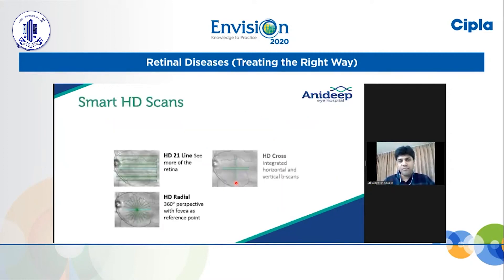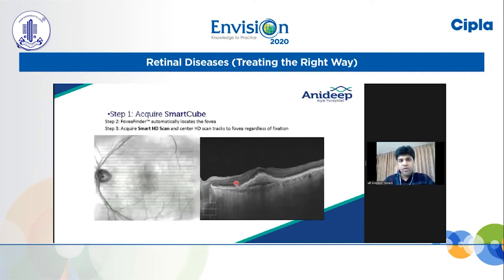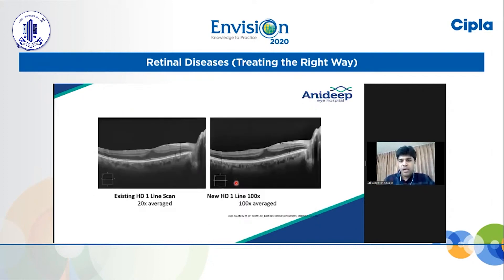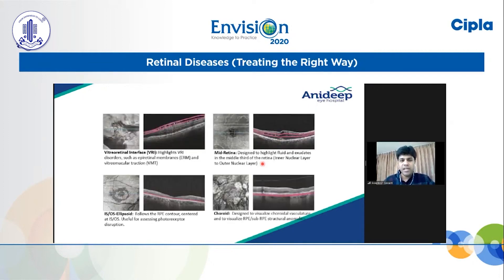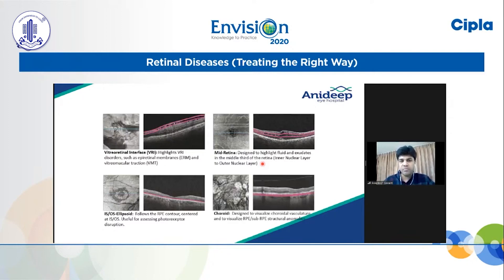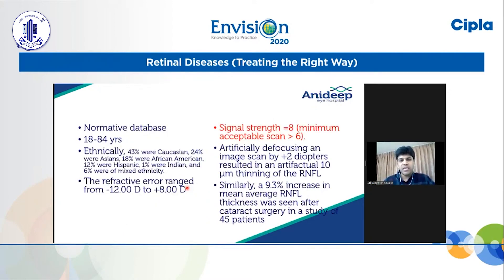The newer OCT machines have high-definition scans. We can also have something like a smart cube if it is difficult for the patient to fix — there is inbuilt software called Fovia Finder to help in imaging. With en-face imaging we can image the lower part of the retina and the choroid. En-face imaging can be segmented at various levels — the vitro-retinal interface, the mid-retina, the IS/OS junction, as well as the choroid. The normative database typically in a Zeiss machine covers 18 to 84 years with an ethnic distribution from all over the world.